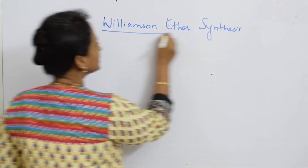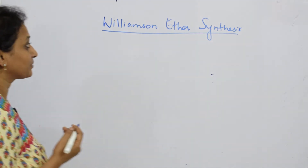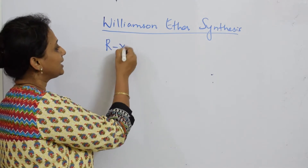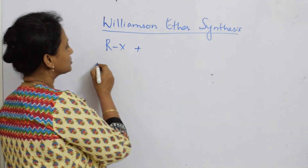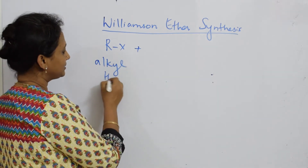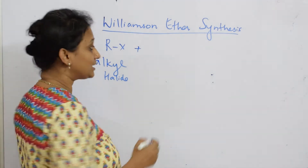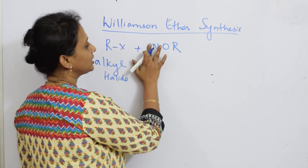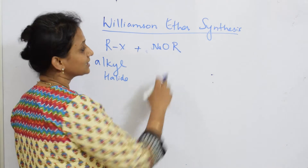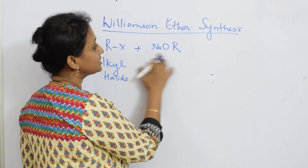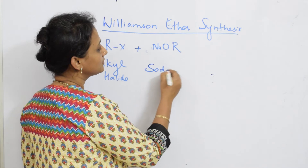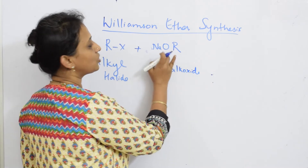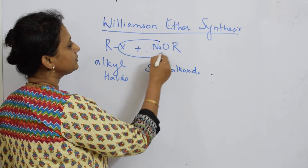Observe carefully — it's really easy but a little tricky. In Williamson Ether Synthesis, you basically require an alkyl halide along with a sodium alkoxide.